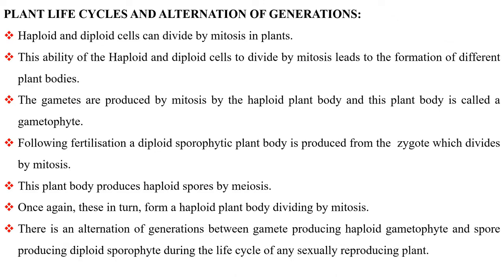Haploid and diploid cells can divide by mitosis in plants. This ability leads to the formation of different plant bodies. The gametes are produced by mitosis by the haploid plant body, called the gametophyte. Following fertilization, a diploid sporophytic plant body is produced from the zygote which divides by mitosis. This plant body produces haploid spores by meiosis. These in turn form a haploid plant body by dividing by mitosis. There is an alternation of generations between the gamete-producing haploid gametophyte and the spore-producing diploid sporophyte during the life cycle of any sexually reproducing plant.